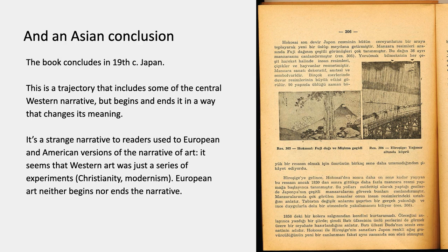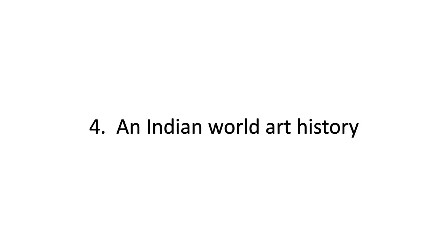It's a strange narrative for readers used to American and European versions, because Western art appears as just a series of experiments — Christianity first, modernism second — and neither one of them really worked out. European art neither begins nor ends the narrative. This can seem incomplete and evasive — starting in an odd place, ending in an odd place, going out of its way to avoid certain things — as opposed to the unaccountably inclusive multi-volume Russian art history, or the idiosyncratic Kemenov book ending with Rockwell Kent.